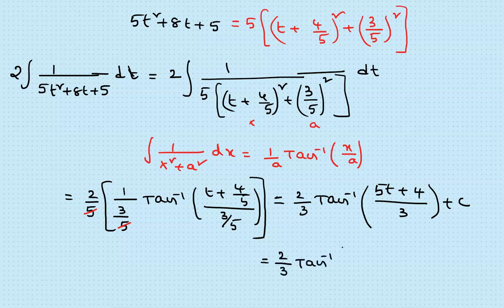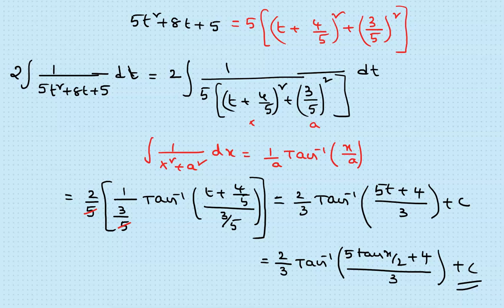In summary: for the a + b·sin x type problem, substitute t = tan(x/2), find the dx and sin x values, substitute and simplify, then reduce to the 1/(ax²+bx+c) form. Next, complete the square using the (1/2 × coefficient of x)² method, then apply the nine standard integral formula to solve.